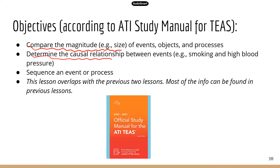Determine the causal relationship between events — the cause and effect relationship. A good example is smoking and high blood pressure: smoking is likely to cause high blood pressure, which may lead to cardiovascular diseases. Next is sequence of an event or process. TEAS wants you to be able to identify the correct sequence of a series of events — what happens first, what happens next, or what happens last.